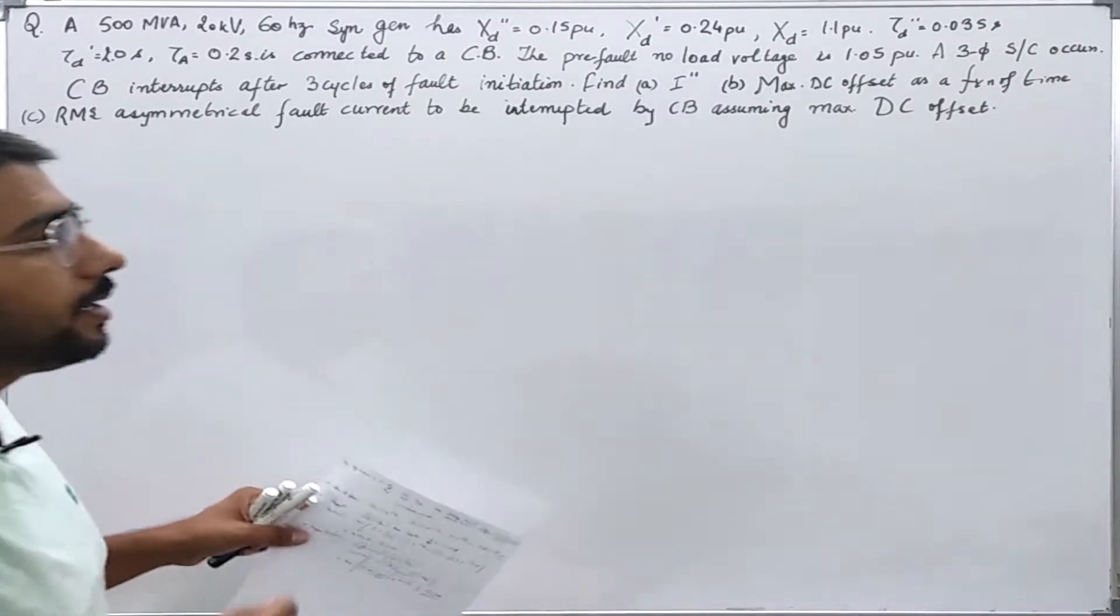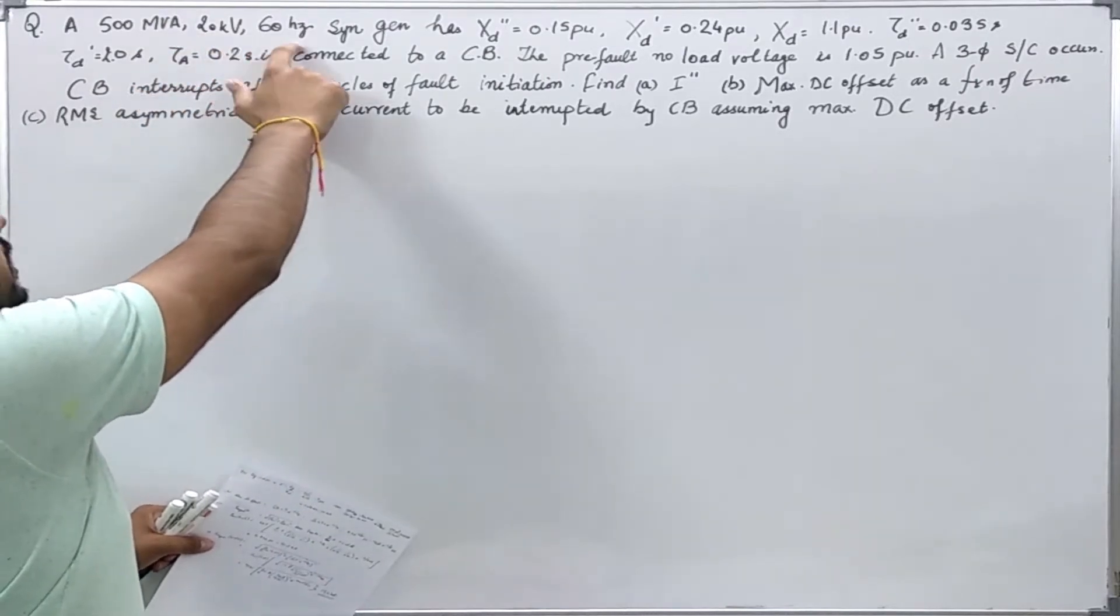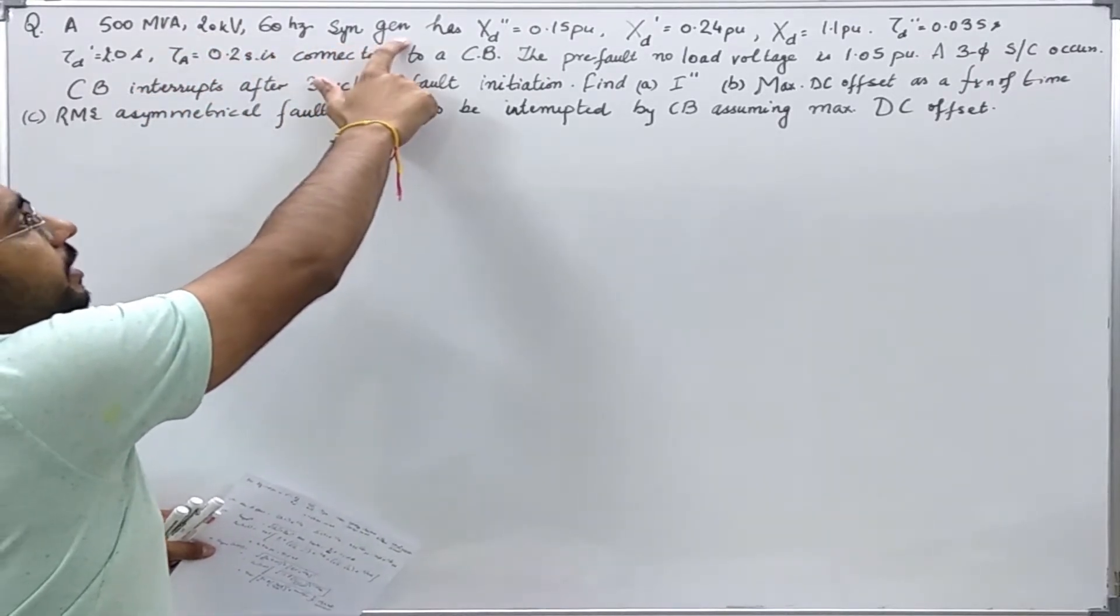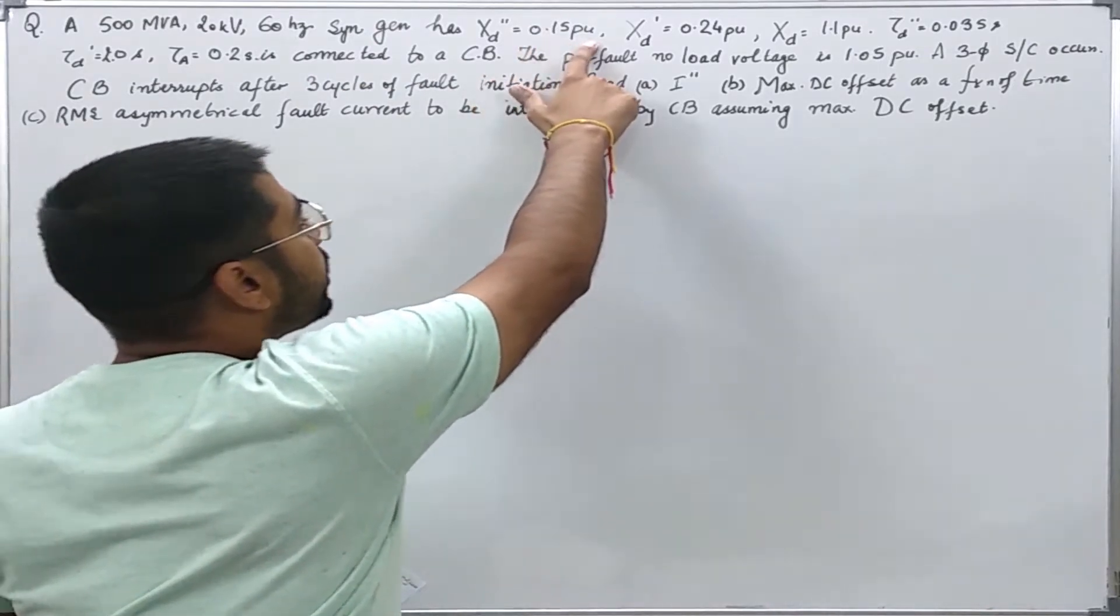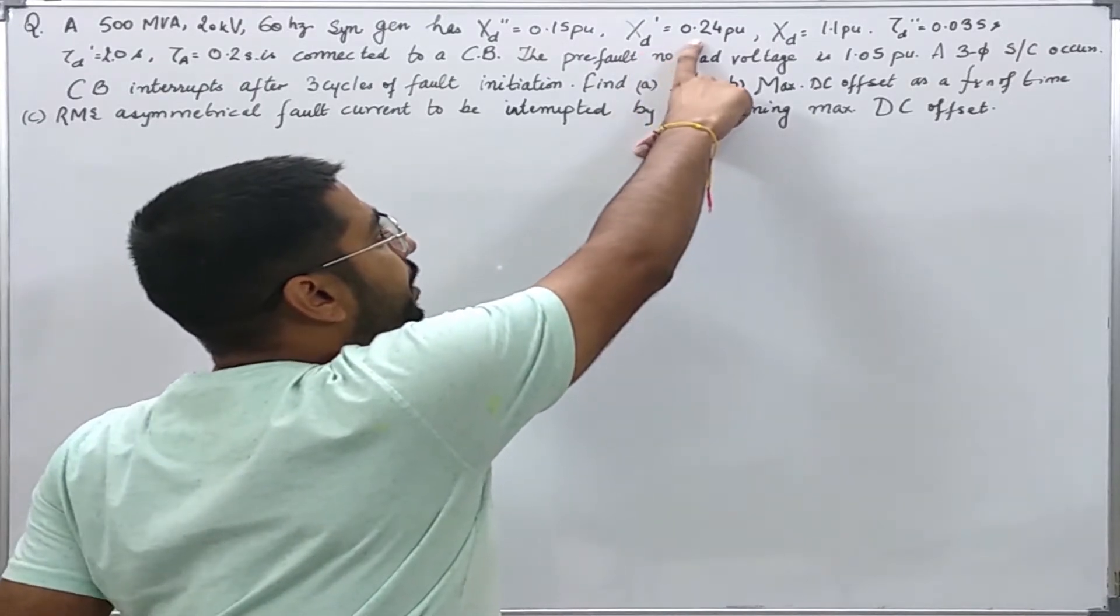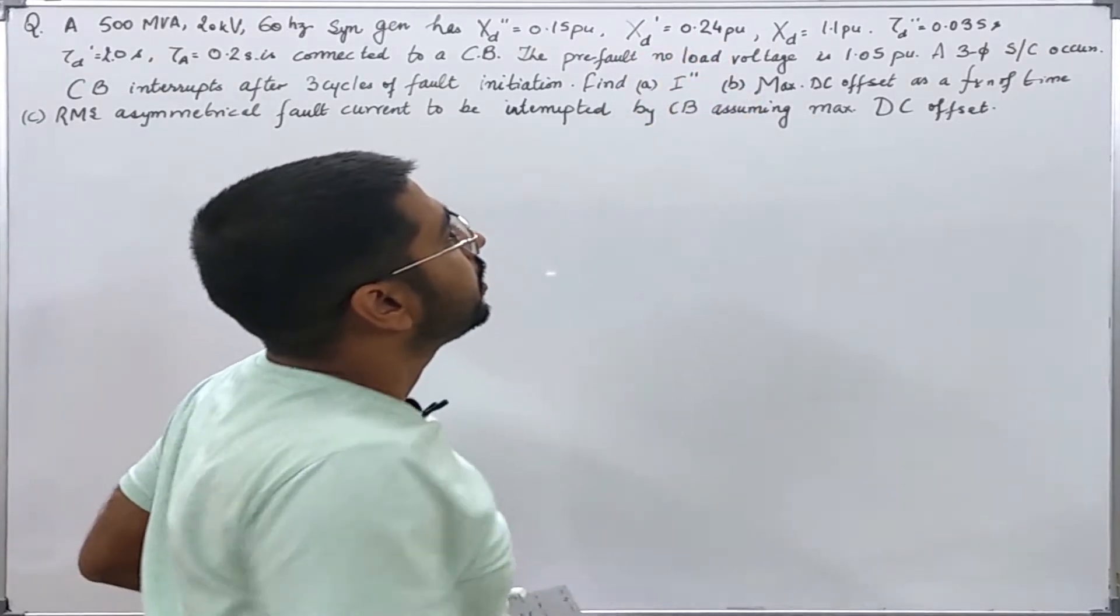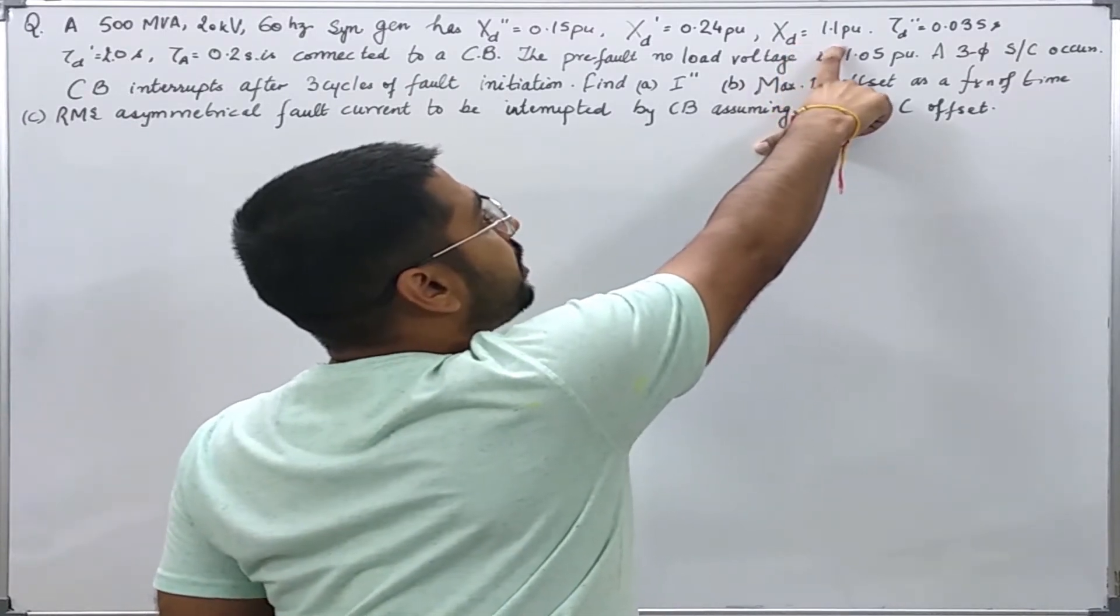It is said that there is a 500 MVA, 20 kV, 60 Hz synchronous generator which is having sub-transient reactance as 0.15 per unit on its base. The transient reactance is 0.24 per unit and the synchronous direct axis reactance as 1.1 per unit.